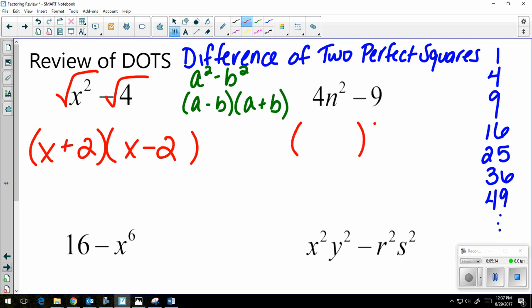Same thing over here. Set up two parentheses. One gets a plus, one gets a minus. Square root each piece. The square root of 4n squared is 2n, so that goes in the first spot of each parentheses. Square root of 9 is 3, which goes in the second spot.